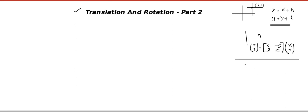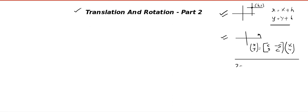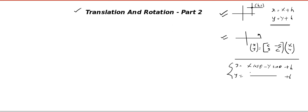One more very important thing: suppose they ask you to do translation and rotation together. My suggestion is, do it one by one. There is a combined formula that looks like x = X cos θ minus Y sin θ + h, and y = similarly + k. It is okay to apply this formula, but simplification will be really, really difficult. So my opinion is: first do translation, get an answer, and then do rotation on that answer. That will be a little bit easier for simplification.